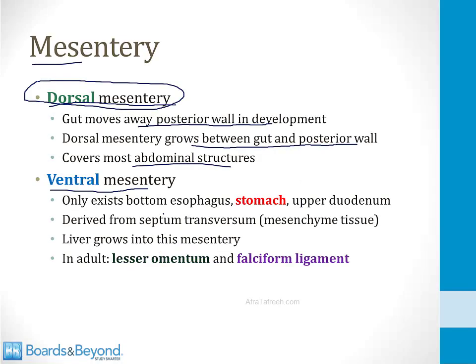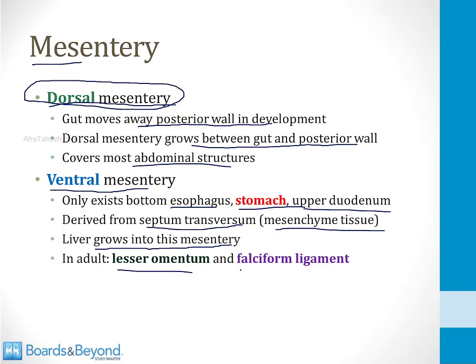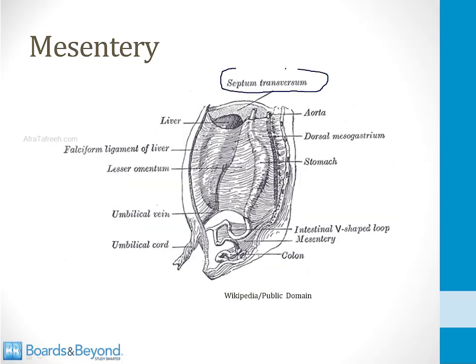Ventral mesentery exists only in a few places: the esophagus, the stomach, and the upper duodenum. It is derived from the septum transversum, a mesenchyme tissue from the mesoderm. Importantly, the liver grows into the ventral mesentery, giving rise to two structures on either side: the lesser omentum (connecting liver to stomach) and the falciform ligament (connecting liver to the anterior abdominal wall).